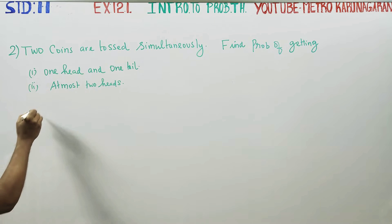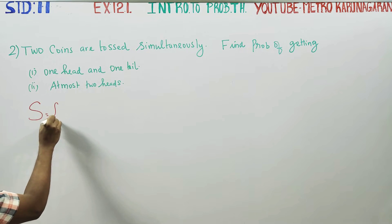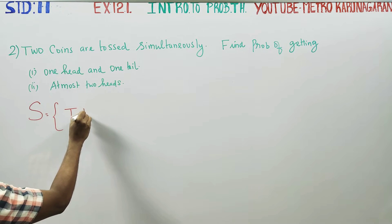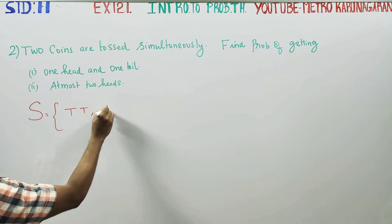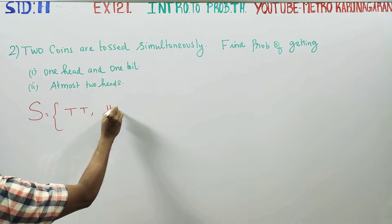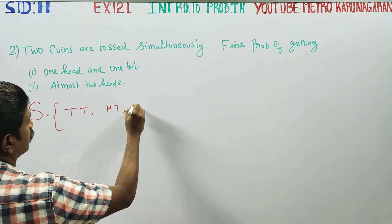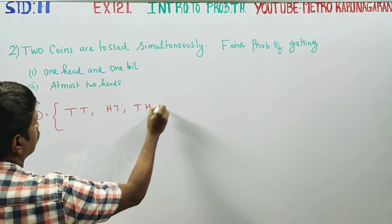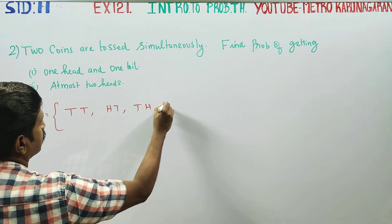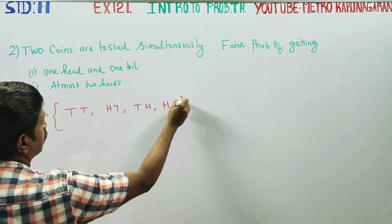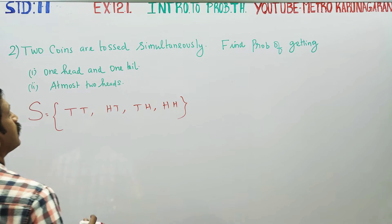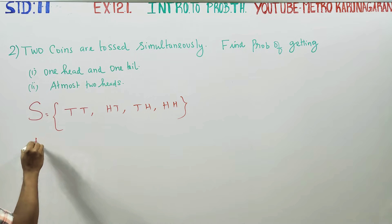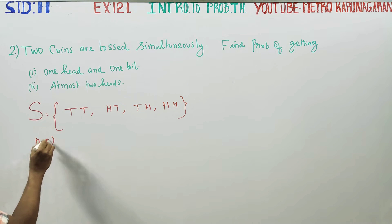Two coins are tossed simultaneously. The sample space outcomes in order are: tail-tail, head-tail, tail-head, head-head. Now, n of S is equal to 4.